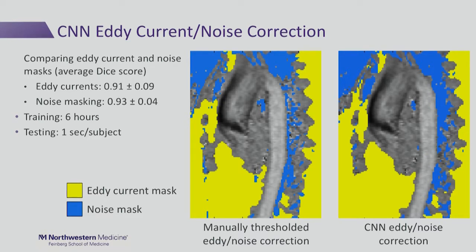For results from the eddy current and noise correction, we use a dice score to compare the masks. A dice score varies from zero with no agreement to one with perfect agreement. We find a dice of 0.91 for eddy current and 0.93 for noise masking over our 100 testing subjects. Each of these networks takes about six hours to train and about one second to run. We can see the eddy current mask in yellow and the noise mask in blue, comparing the manually thresholded version with the convolutional neural network outputs.